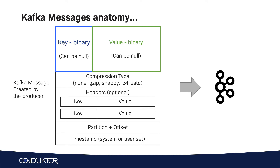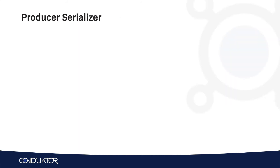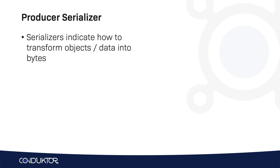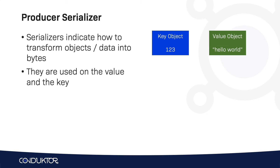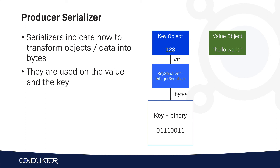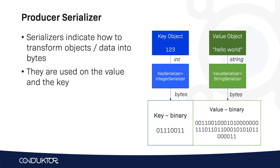The key and value are binary, but when we write messages in Kafka we use higher-level objects, and to transform these into binary we use producer serializers. Serializers indicate how to transform objects into bytes, and they are used for both the key and the value. For example, if the value is the string 'hello world' and the key is the integer 123, we set the key serializer to IntegerSerializer — which converts that integer into bytes — and the value serializer to StringSerializer, which converts the string into bytes.